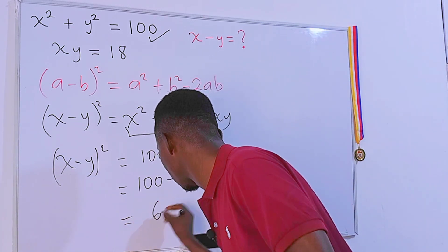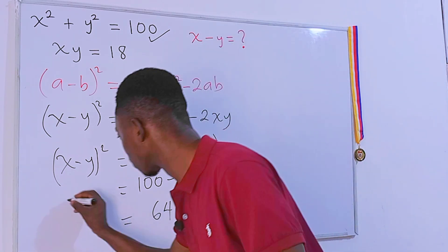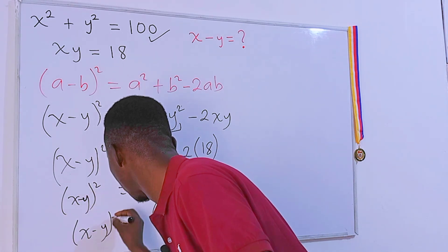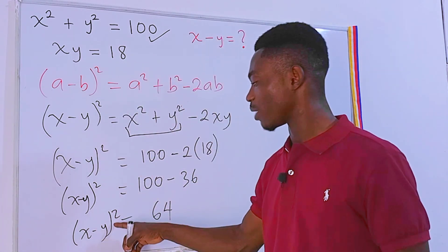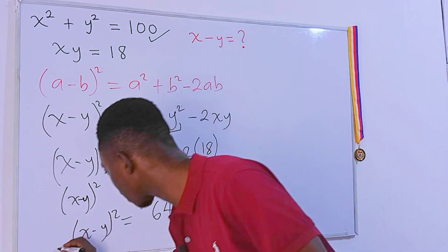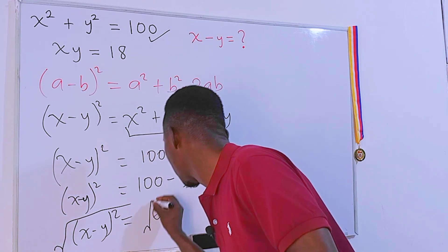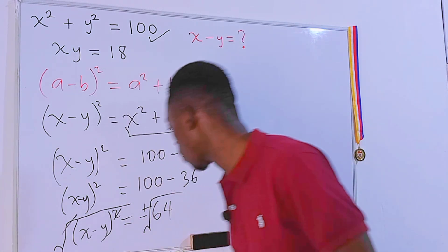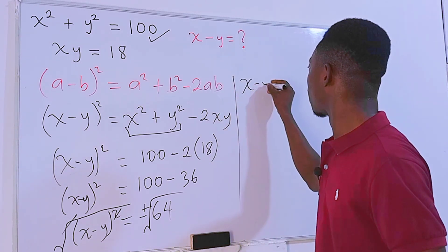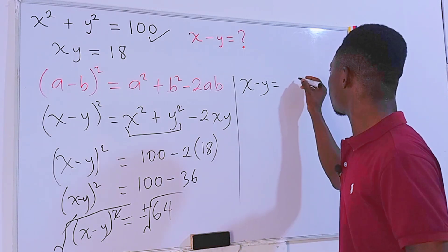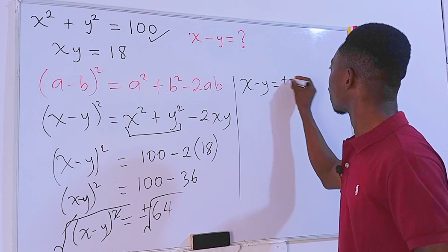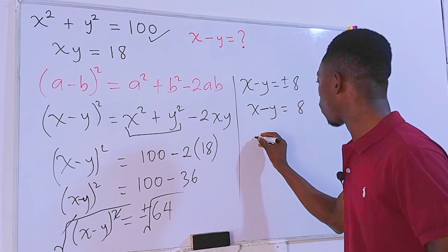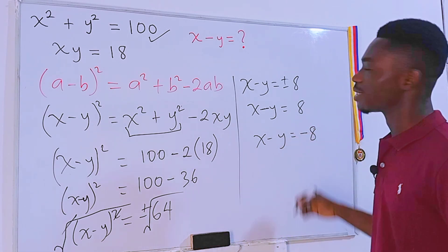Simplifying: 100 minus 2 times 18 is 100 minus 36, which equals 64. So (x minus y) squared equals 64. We can write this as (x minus y) squared equals 4 squared, which means 64. Taking the square root of each side — and plus or minus is very important here — we get x minus y equals plus or minus 8. The square root of 64 is 8.